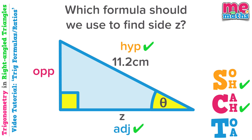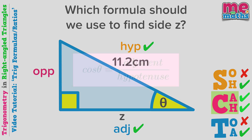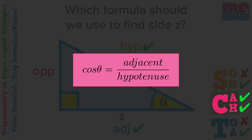Let's look at which of those trig formulas the hypotenuse appears in. As we can see it's part of SOH and CAH. Our next active side is the adjacent, as that is the side that we are looking for, so it's part of our question. Again, let's look at which formulas the adjacent appears in — we can see it appears in CAH and TOA. So we're not really interested in the opposite for this question; it's not active, we've not been given it, we're not being asked to find it, so we just ignore it. The formula that uses both our active sides is CAH, or more specifically, cos theta equals adjacent divided by hypotenuse. So that's the formula we would use to find z. We won't actually find that side until the next tutorial in this series.